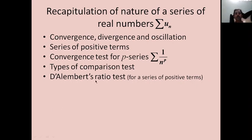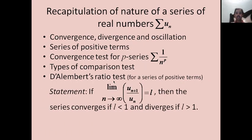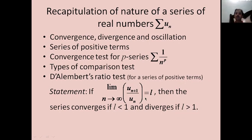We also have a very important test for series of positive terms known as D'Alembert's ratio test. It states: if lim(n→∞) u_{n+1}/u_n = l, then the series converges if l < 1 and diverges if l > 1. However, this test fails if the value of the limit equals 1.